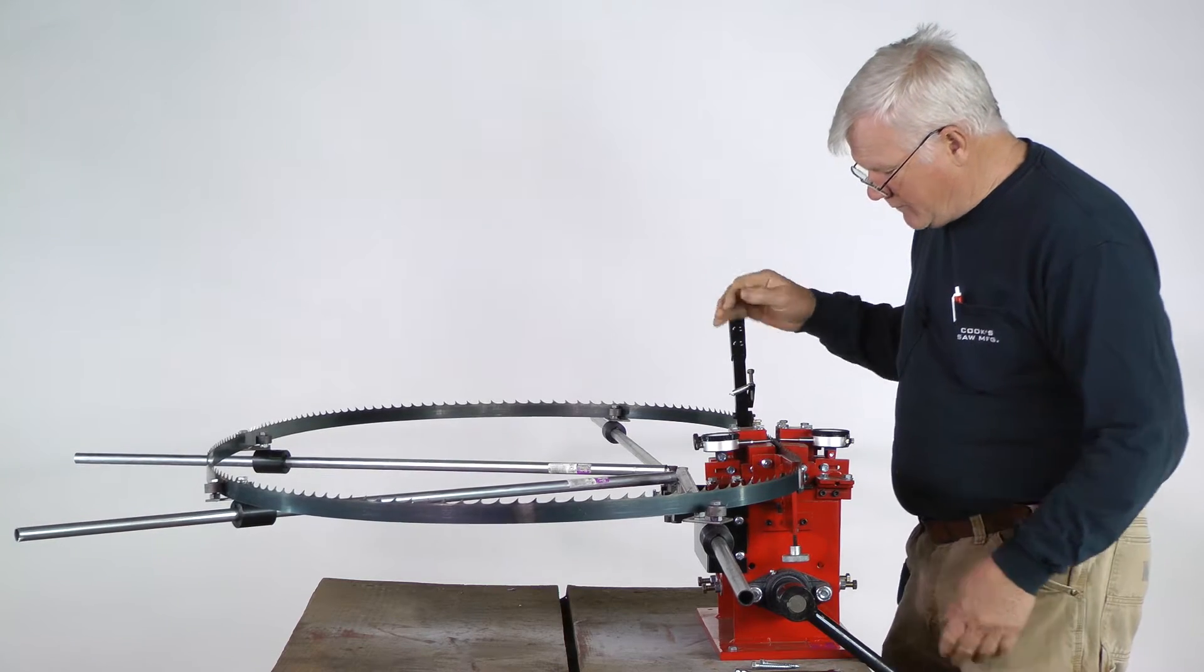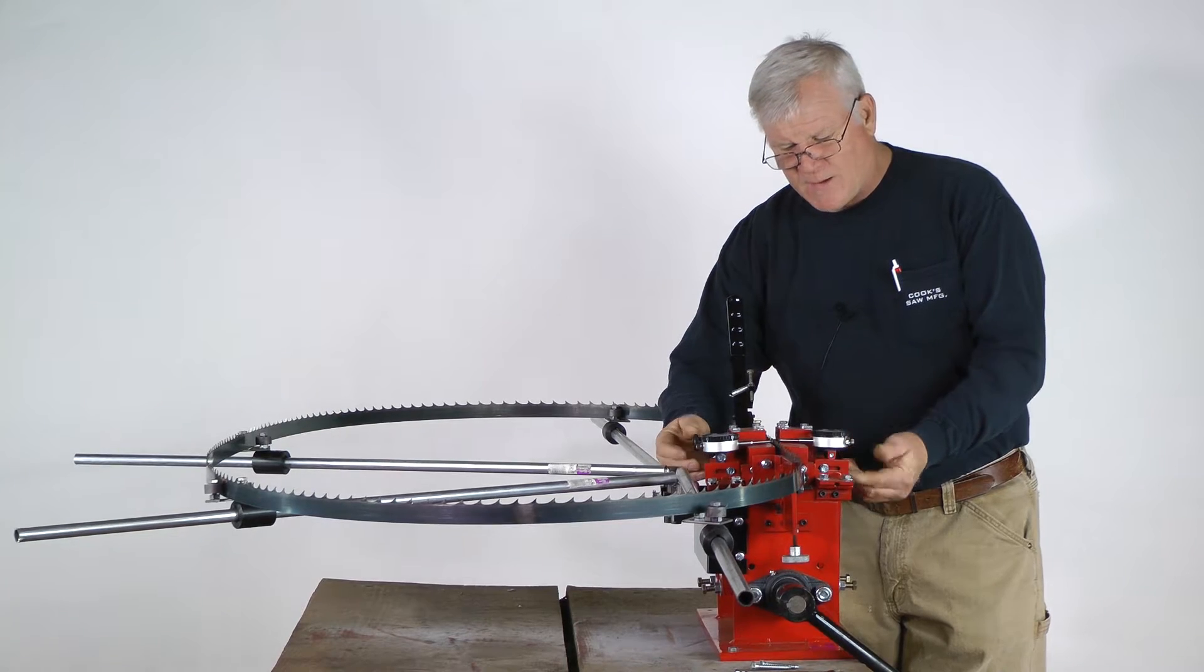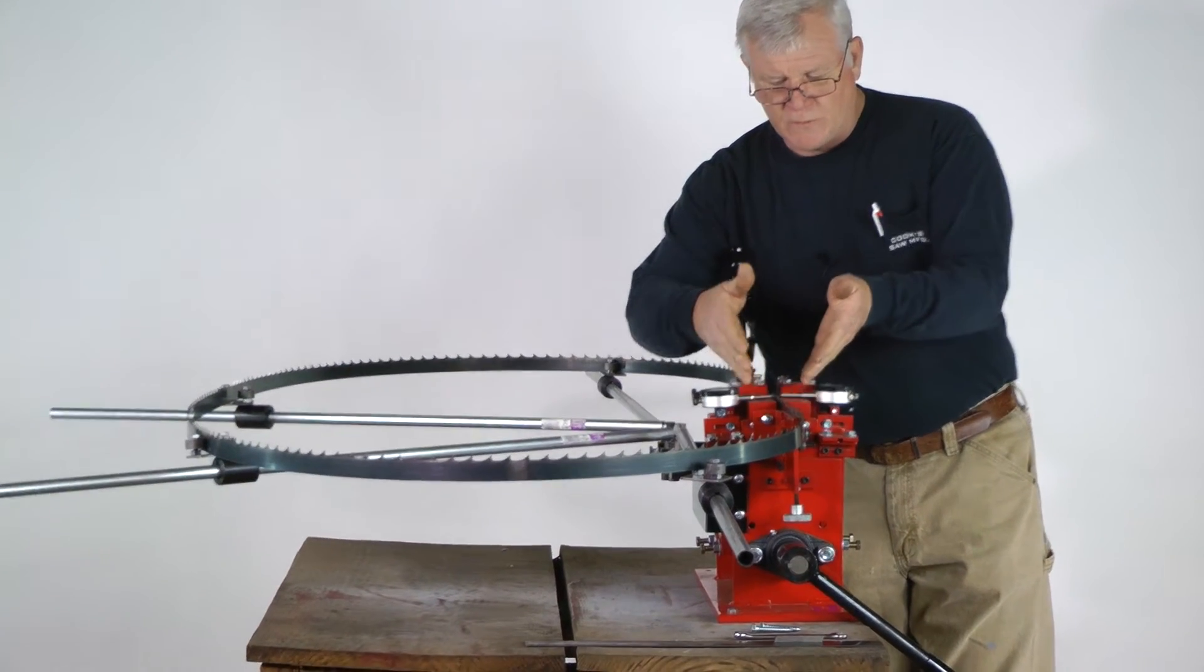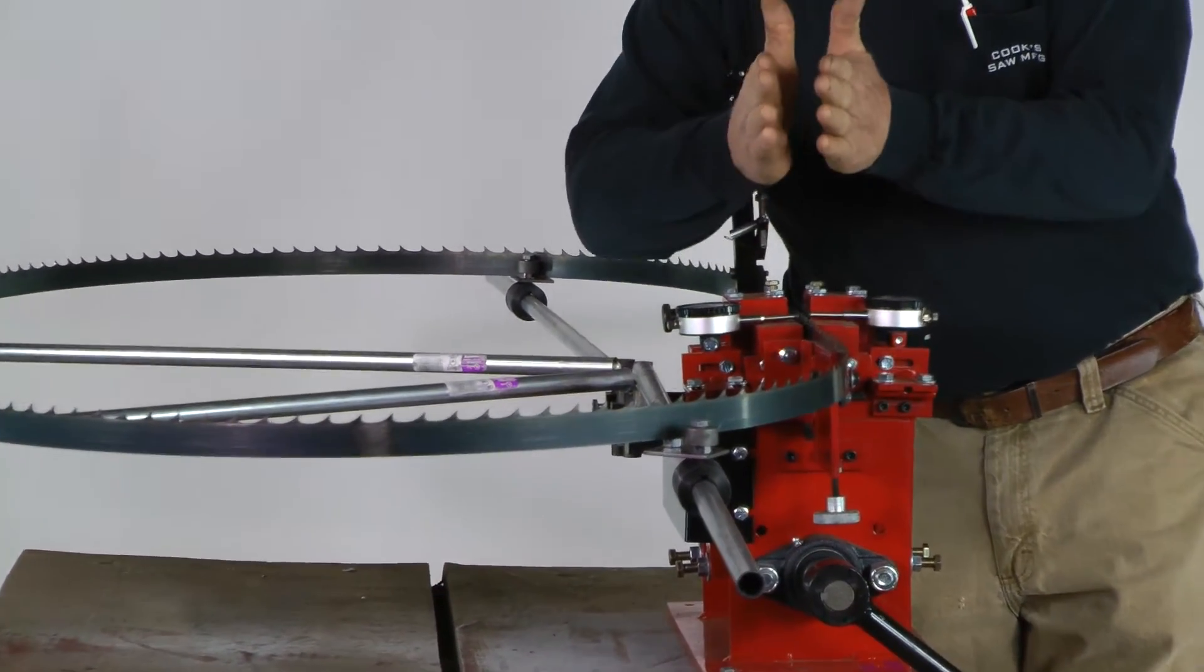What's really important about this machine is when you see both of these come together and then they open out and the blade is left in the center. It does that as well on the dial indicated measuring blocks. But when this thing comes together, it comes together metal to metal all the way down.